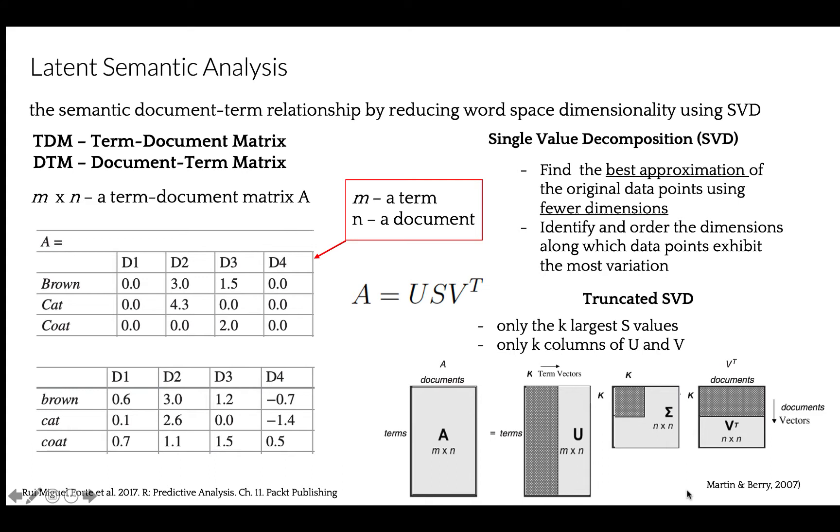LSI decomposition can be interpreted as follows. One matrix represents the relation between documents and topics. The diagonal matrix scales the topic by their corpus strength, or topic strength. And the third matrix models the term-topic relationship.